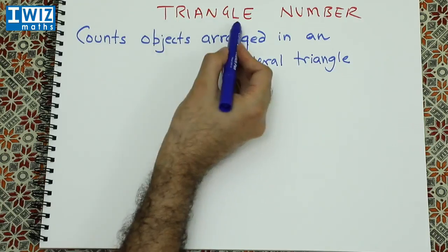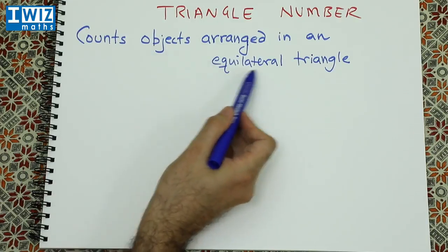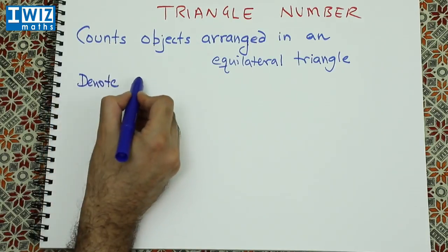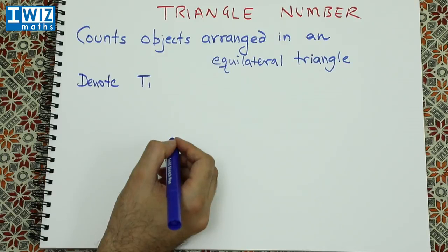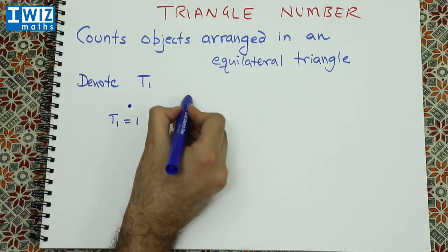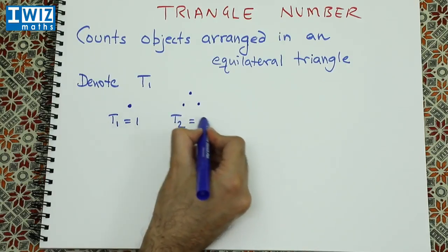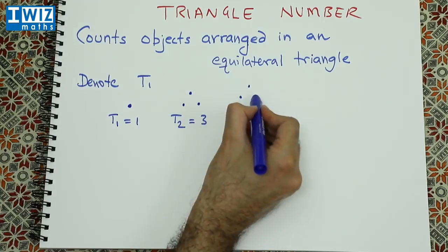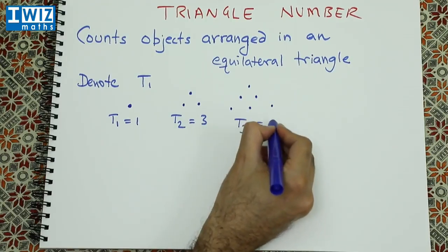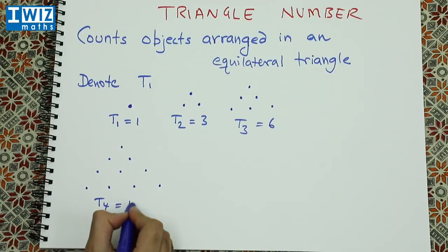Let's consider a triangle number. Here it counts objects arranged in an equilateral triangle. Let's denote T1 as the first triangle number. We place a dot there, so T1 is simply 1. Then we have T2 equals 3, T3 equals 6, and T4 equals 10.